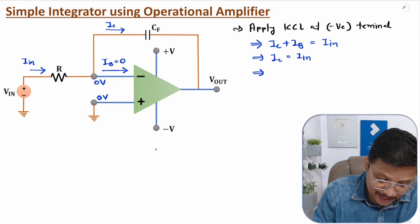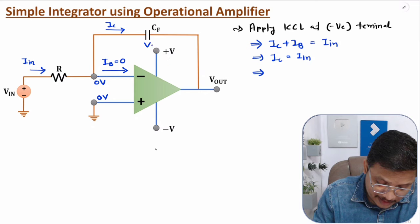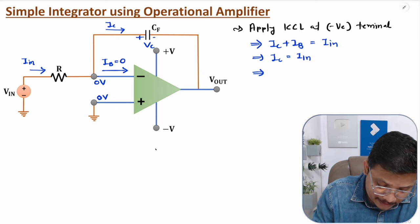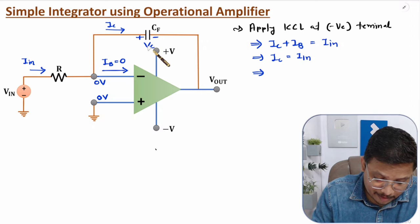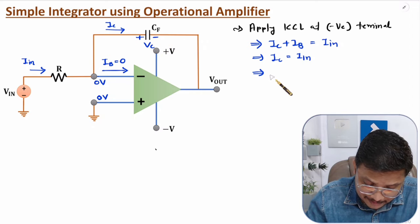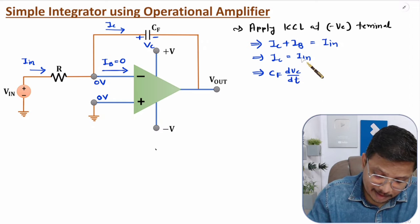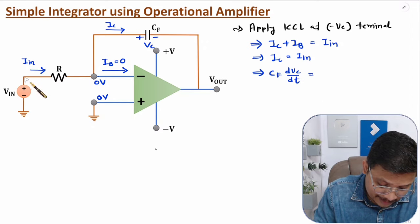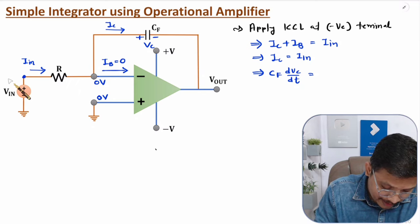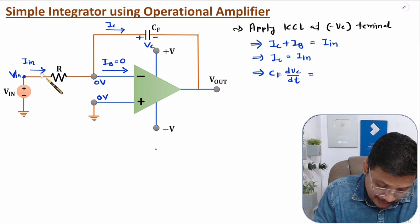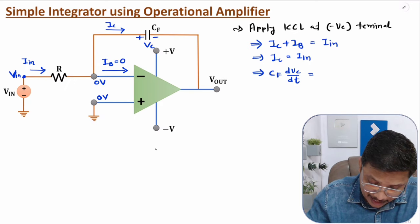What is Ic? Ic is the current passing through the capacitor. If I say the potential across the capacitor is Vc, then as per the direction of current, the polarity across the capacitor will be plus-minus with Vc. So Ic through the capacitor is Cf × (dVc/dt). What is Iin? Iin passes through R. At the input terminal, the potential is Vin, and the virtual ground terminal is at 0V. So Iin = (Vin − 0) / R.